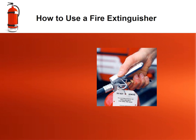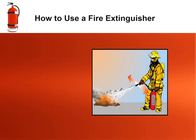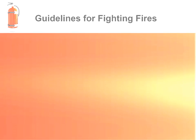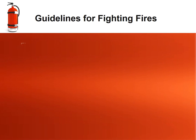Squeeze the top of the handle to open a valve that releases the pressurized extinguishing agent. Then the last S in PASS is sweep from side to side until the fire is completely out. Start from a safe distance of six to eight feet away, then slowly move forward if possible. Once the fire is out, keep an eye on the area in case it reignites.